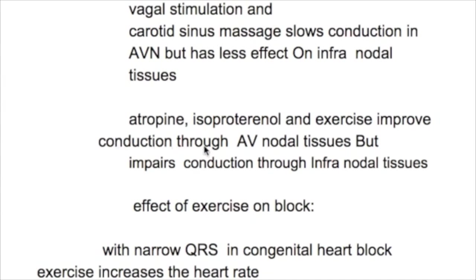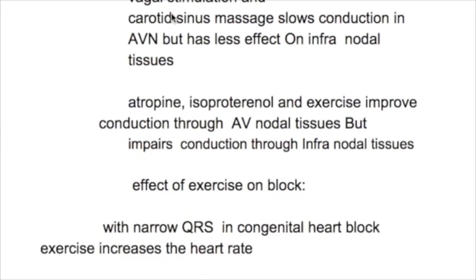Atropine, isoproterenol, and exercise improve conduction through the AV node but impair conduction through the infranodal tissue. In summary, vagal stimulation and carotid sinus massage slow AV node conduction, while atropine, isoproterenol, and exercise increase conduction through the AV node. All of these have very little or no effect on infranodal conduction.